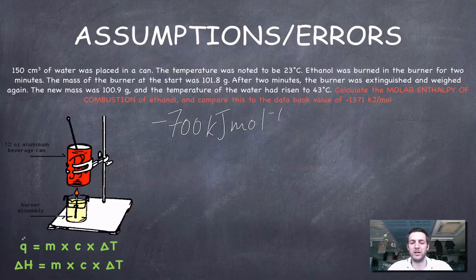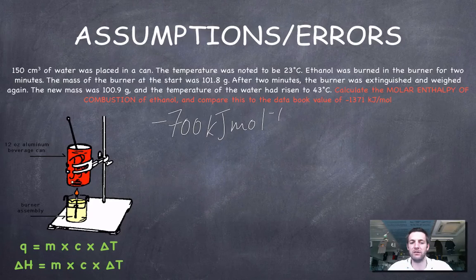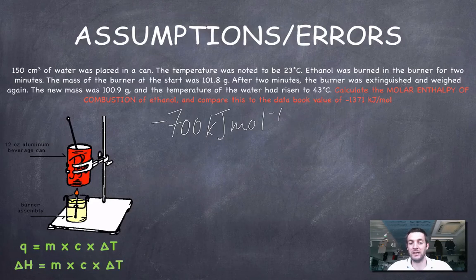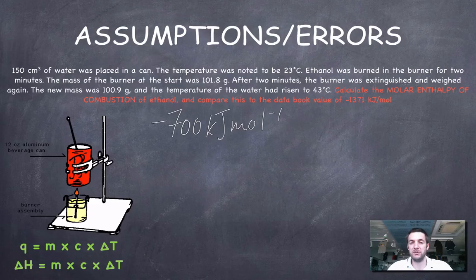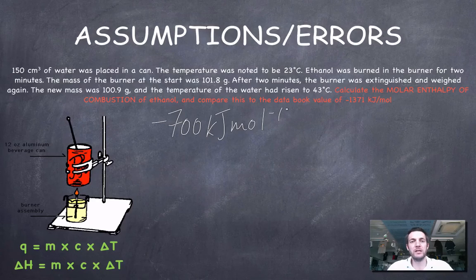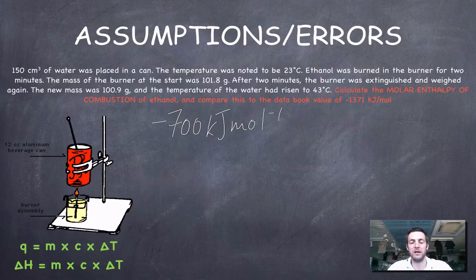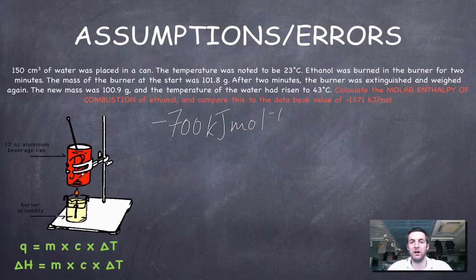We've assumed that all this enthalpy change is going to turn into a heat change, and all that heat is going to make it into the water. But we're heating the air around it. We're heating the can, so the specific heat capacity of the calorimeter is not going to be exactly the same as the water. And this calorimeter is going to be losing heat all the time. We would expect a fairly large difference in these two values because of the large amount of error in this experiment, and the assumptions that we've made about all the heat making it to the water simply can't be right.